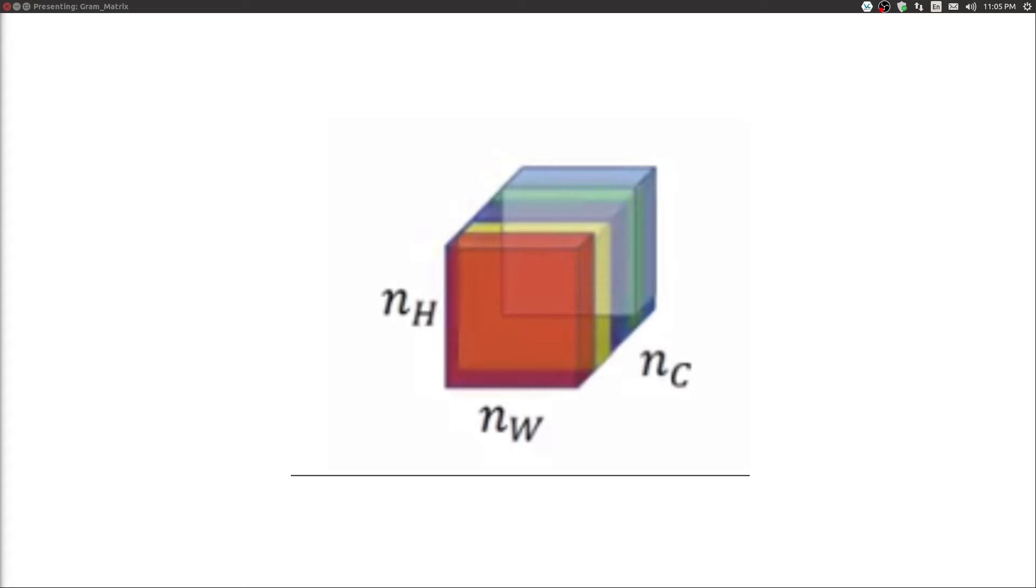Now if we can somehow find the correlation between these features, we can get the idea of the style, as correlation is nothing but the co-occurrences of the image. So in this figure we can see that we have a red channel, yellow channel, and green channel. And let's say the red channel and yellow channel are fired up with high activation values, that means they have high correlation, meaning they occur together.